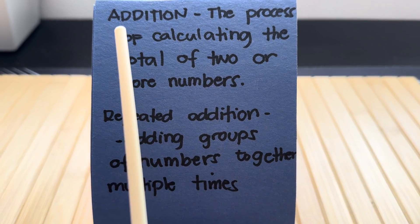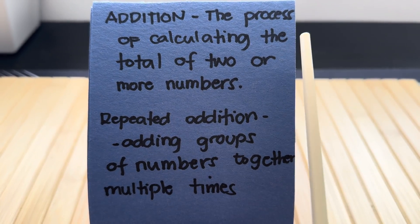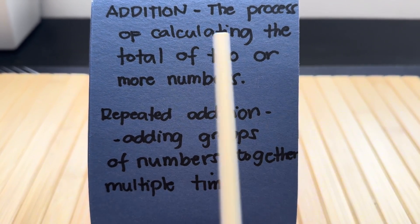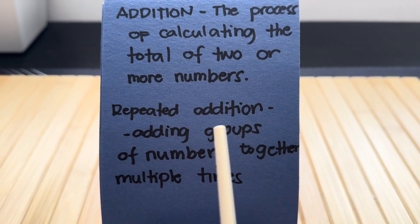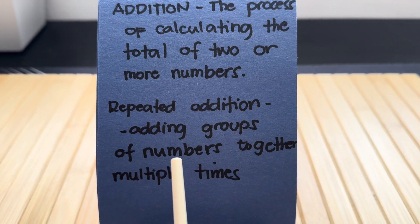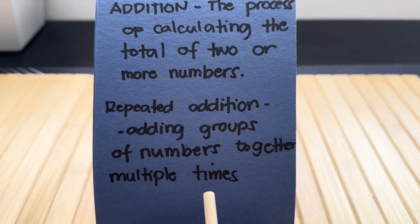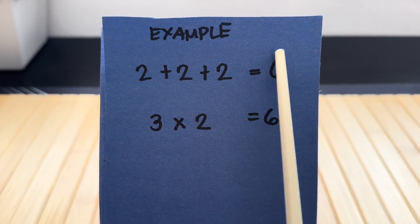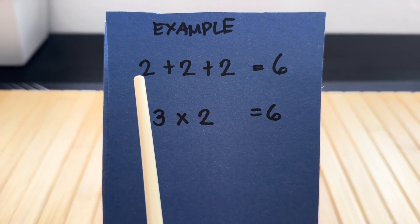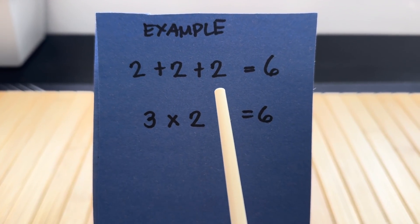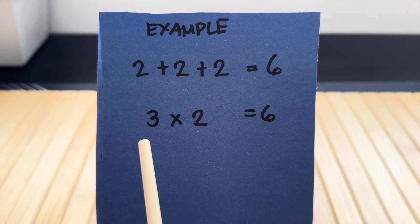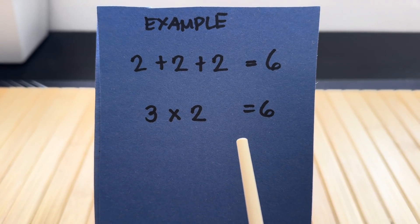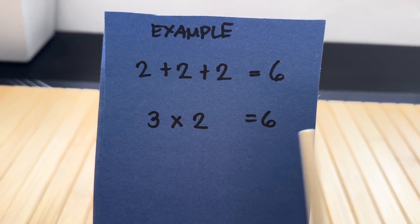Join me and let's do a recap. Let's summarize: first, addition is the process of calculating the total of two or more numbers, and repeated addition is adding groups of numbers together multiple times. Let's check out an example: 2 plus 2 plus 2 is equals to 6, and in multiplication it is 3 multiplied by 2 is equals to 6.